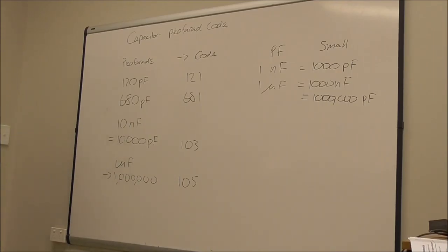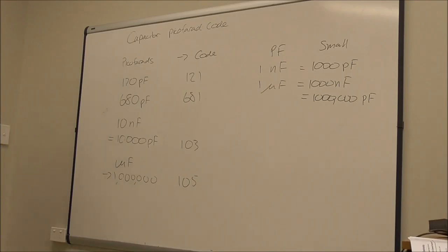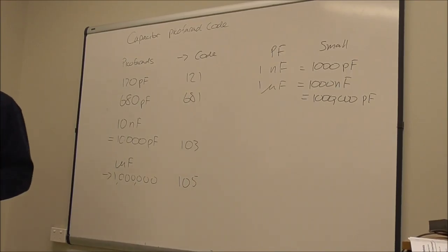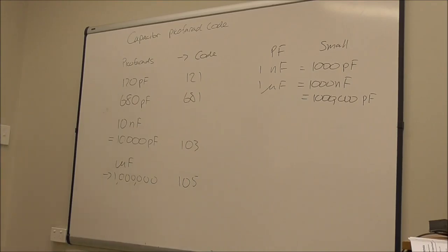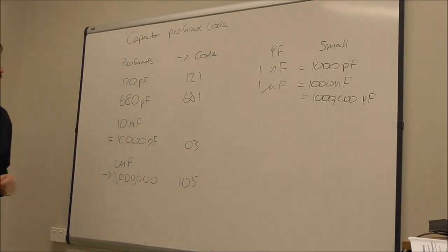The electrolytic capacitors, they're a polarized capacitor, so they only work in one direction. Put them in back to front and they go pop. Those generally have very large capacitance values and they're also quite large in size as well. I think the largest electrolytic I've seen is a 10,000 microfarad. It was about as big as a film can.